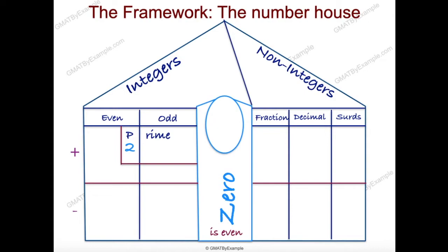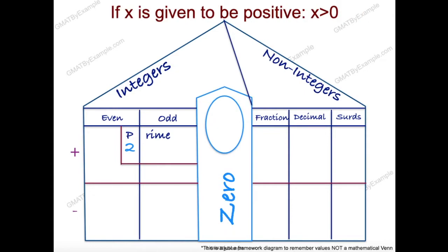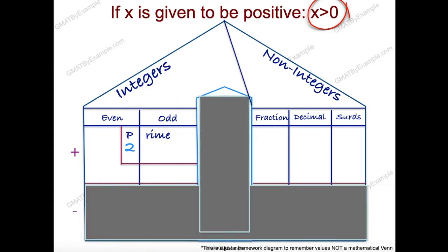Let's see how to apply the framework. Assume that in the question, x is given to be positive, meaning x is greater than 0. Since x cannot be 0, we block out the zero part of the number house. X can also not be negative, so we block out the bottom floor as well. We are left with values we must consider when solving the problem: even and odd, and also fractions, decimals, and irrationals. The intent is to be deliberate about which values you are blocking out and which you are considering.